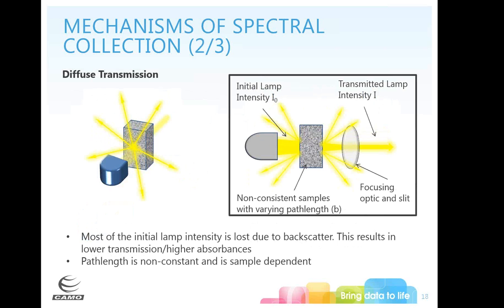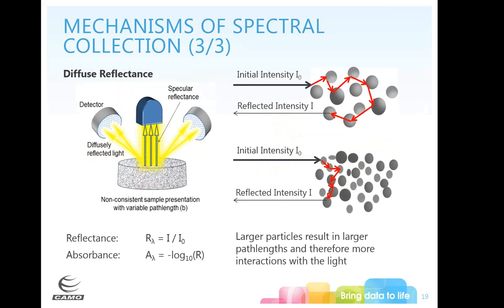A very common way to collect near IR data is diffuse reflectance, which is similar to diffuse transmission except you're collecting the backscatter. With diffuse reflectance, the light goes into your particles, bounces around, and some of it takes different path lengths and comes out. Larger particles have longer path lengths and therefore more interactions with the light, causing more scattering — larger particles scatter more than smaller particles, and these effects are wavelength dependent.